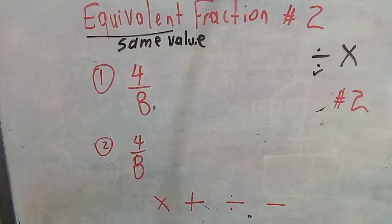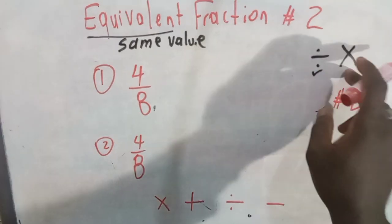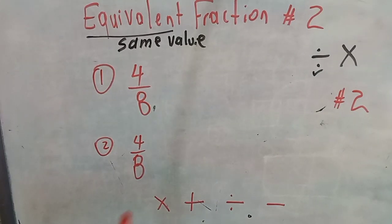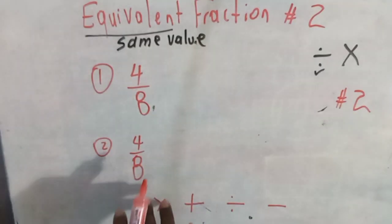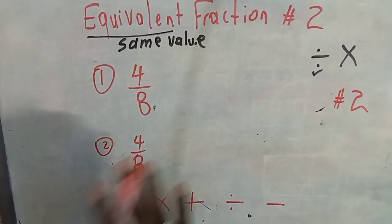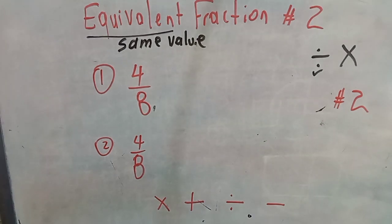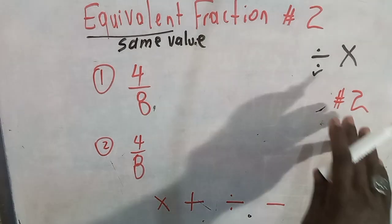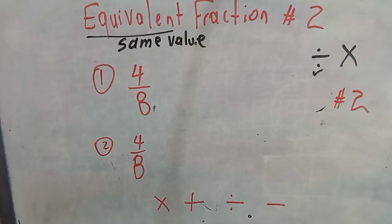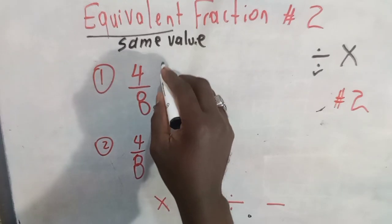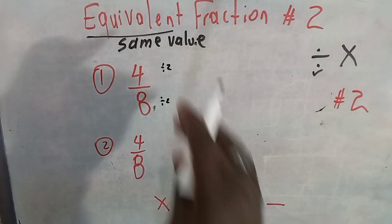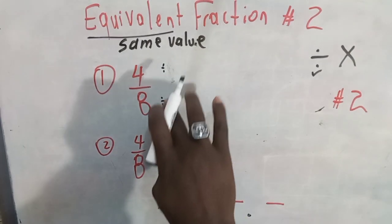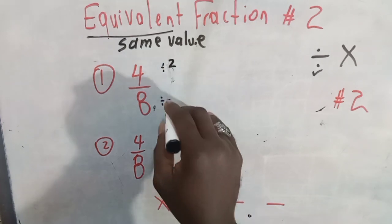Those are your four operations. We're using these two operations to find equivalent fractions of 4/8. Let us use this one for division and this one for multiplication, using the numeral two. If we are going to find an equivalent fraction, we have to divide or multiply both numerator and denominator by the same number.